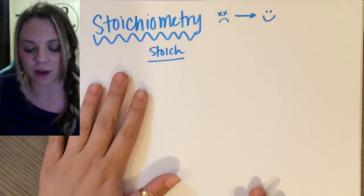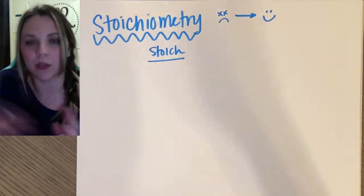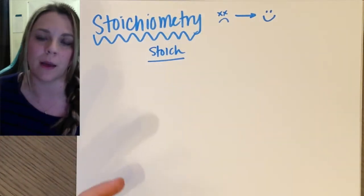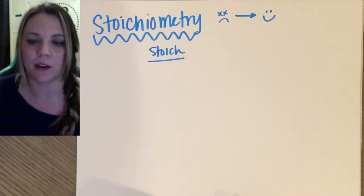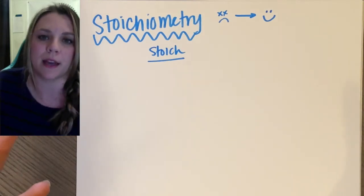Stoic helps us figure out in lab, like if I'm being practical, if I'm in a lab and I'm doing a reaction I start with an amount of reactants. I want to figure out how much product I'm going to make. Am I going to make a lot, am I going to make a little, how much am I actually going to make?